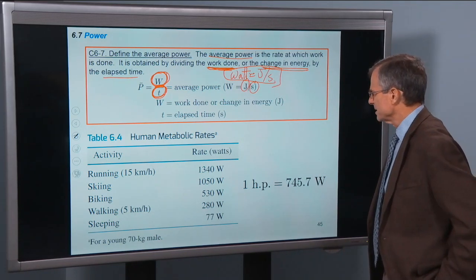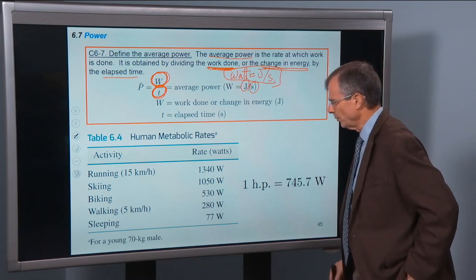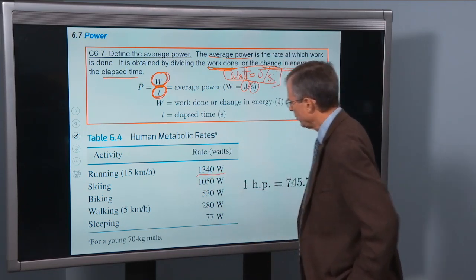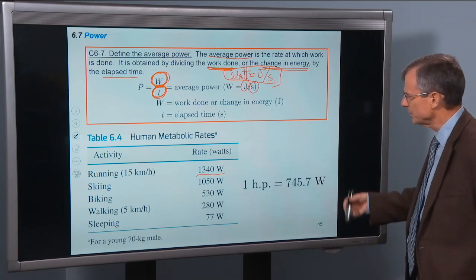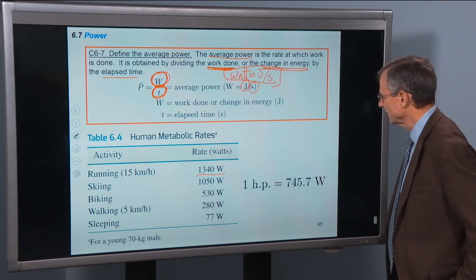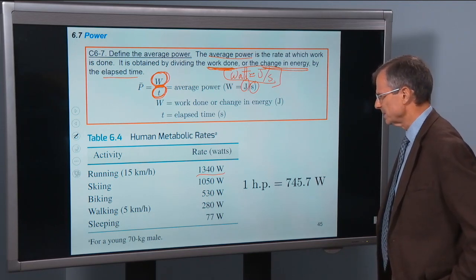Human metabolic rates. If you're running 15 kilometers per hour, you're using 1340 watts. That's how much energy you're using up per second, joules per second. Skiing, biking, walking, sleeping, etc.